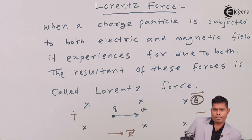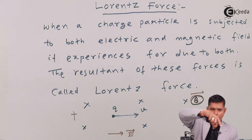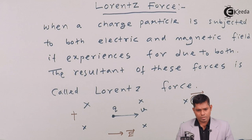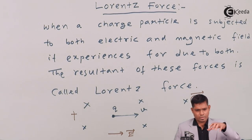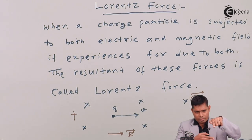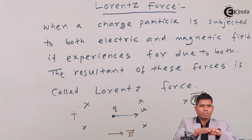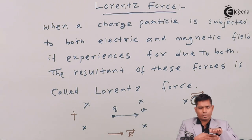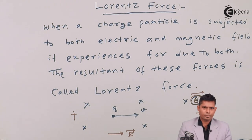The plane continues to move in this way — this plane and this plane and this plane. This is the plane in which the particle is moving, and this is the plane in which the velocity and the magnetic field lies. This plane is perpendicular.